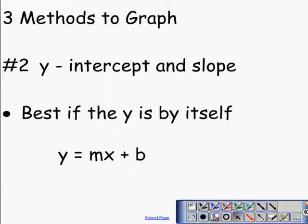Another way to graph would be using the y intercept and the slope. This is best if the equation is in the slope intercept form where the y is by itself. This is because you can easily identify the slope, which is represented by the letter m, and you can easily identify the y intercept, which is represented by the letter b.